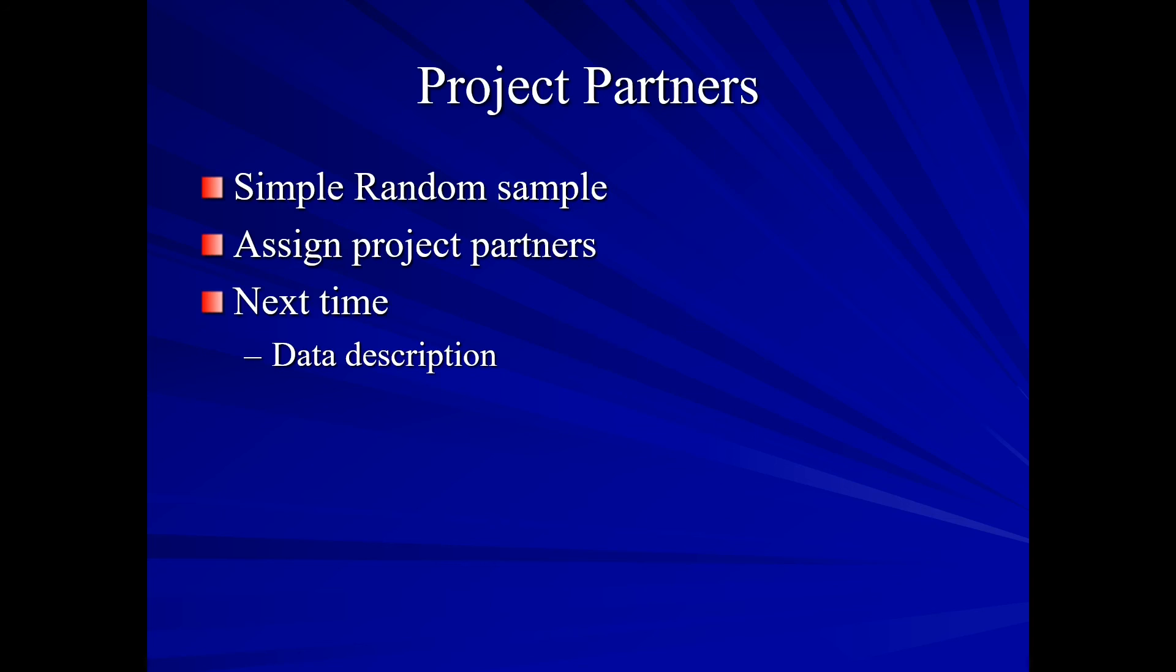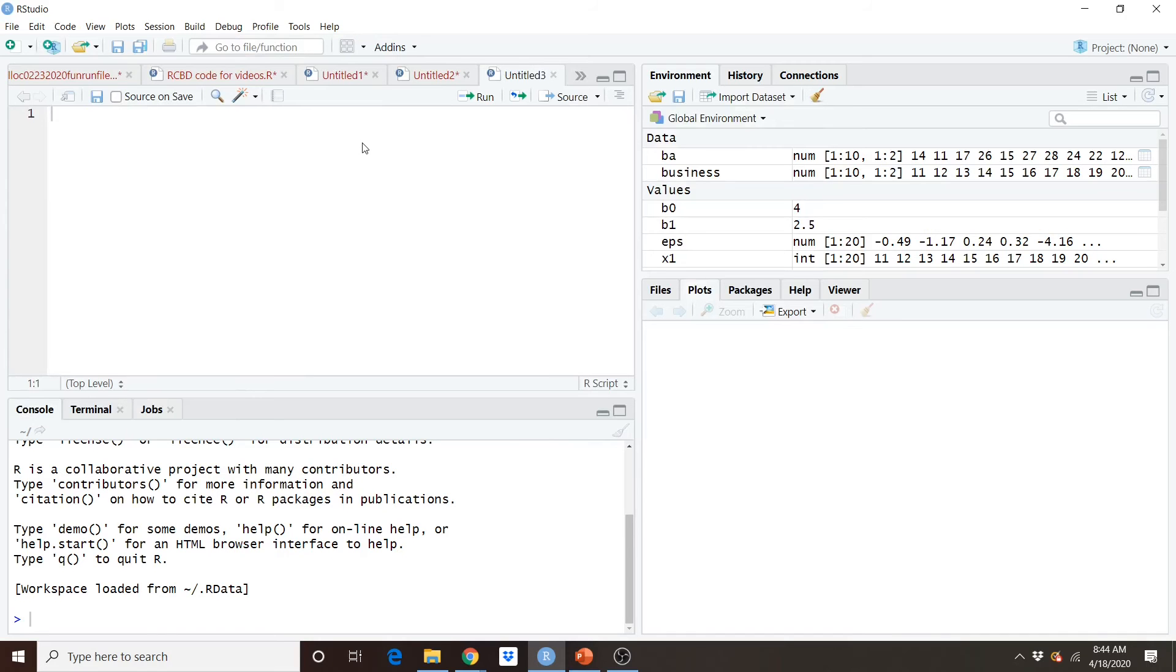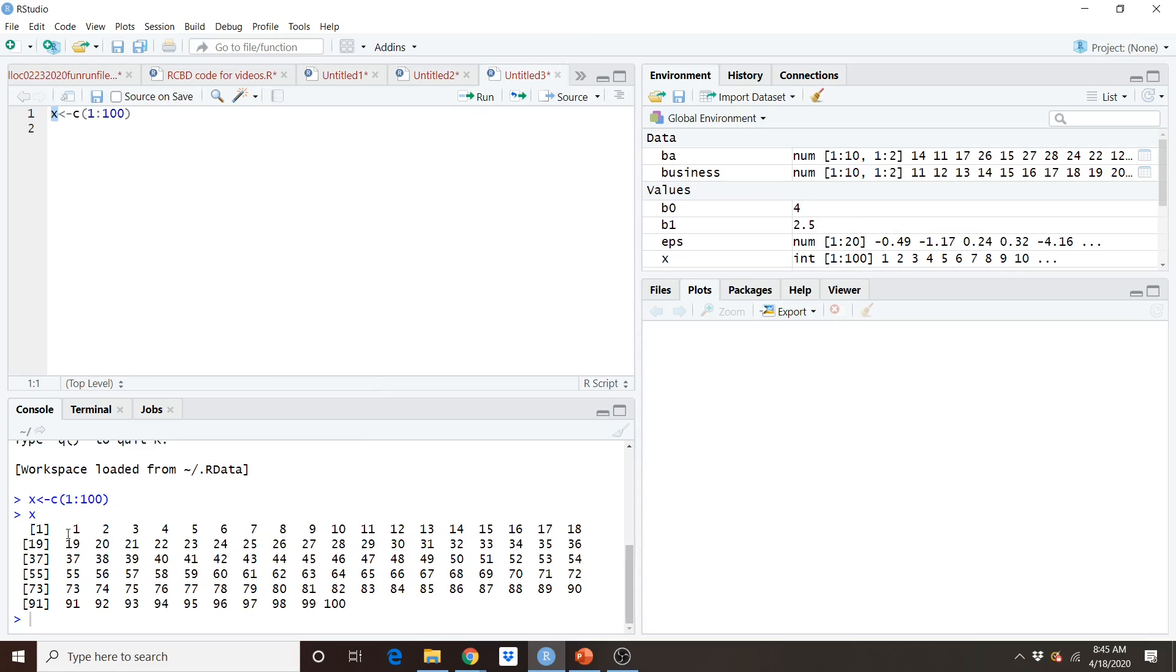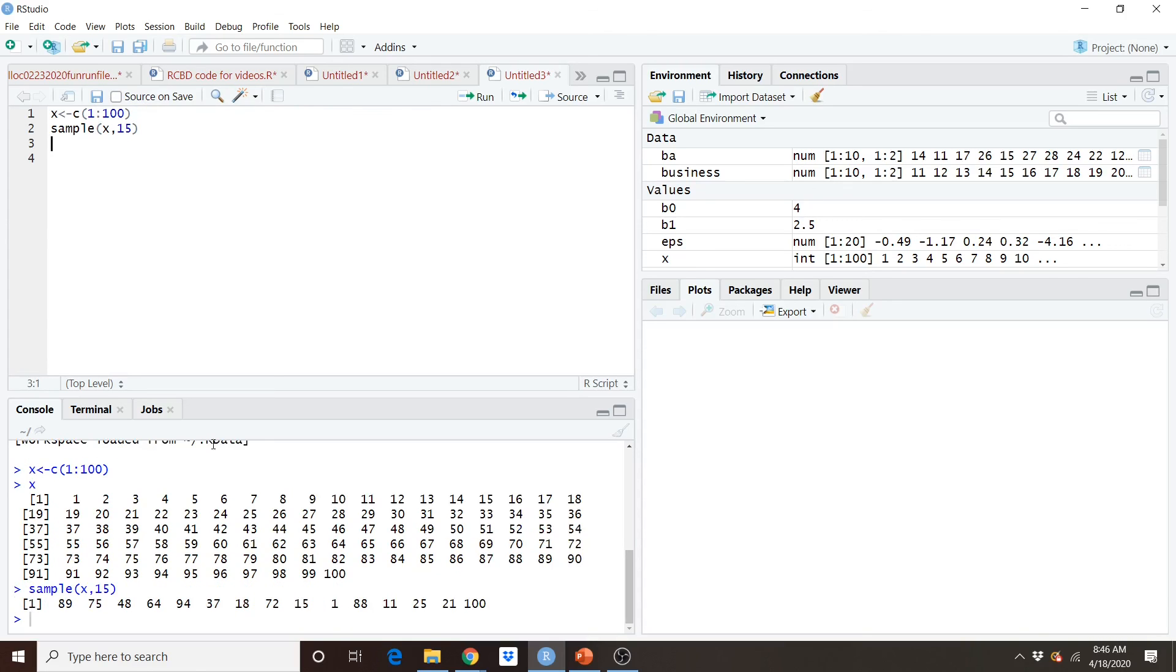So how might we do a random sample in R? Well let's take a look. So what I'm going to do is just generate some data. A very simple example. And perhaps I'll generate 100 numbers. So x is going to be, I'll go from 1 to 100. And there we have our x values. Now perhaps I would like to take just a random sample of say 15 numbers. And so I would simply type in sample, x, and I want to get my 15. And there we can see.